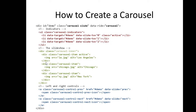Below the first item is another similar division — 'carousel-item' — but with a different image file name. If we have four images we just add another division; if we have five images, another division. We also have to add additional indicators so the indicators correspond with the number of images.